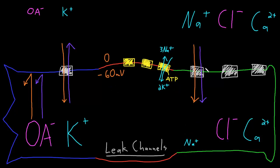Because the concentrations and permeabilities of ions are usually stable in most resting neurons, the resting potential is usually stable as well. Neither potassium nor sodium is at its equilibrium potential, however, so there will be a small amount of net movement of both ions across the membrane — a little potassium dribbling out, and a little sodium dribbling in. This will be matched by ongoing activity of the sodium-potassium pump, which not only creates these concentration gradients in the first place but also maintains them over time.